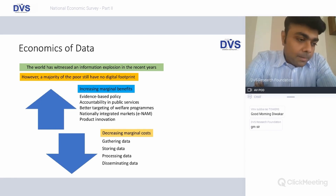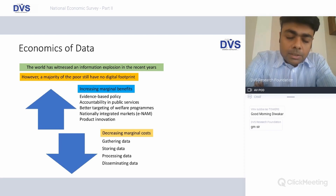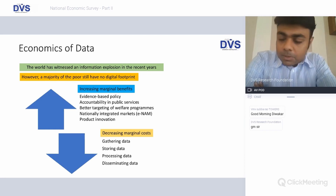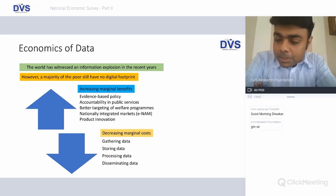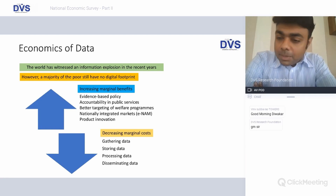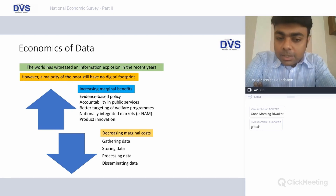The government has thought: instead of looking for opportunities to bring down subsidies or reduce leakages in government benefits, why not use data as a mechanism to offer solutions to larger public problems? Some of the marginal benefits felt were evidence-based policy, because most policy decisions are currently taken on random surveys. This enables precise evidence-based policies, increasing accountability in public services, targeting welfare schemes, and nationally integrated markets like eNAM — a national agricultural market, more like a marketplace for agricultural commodities.